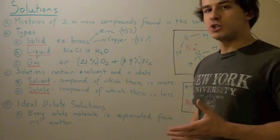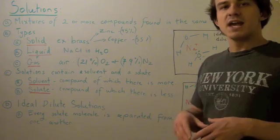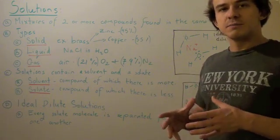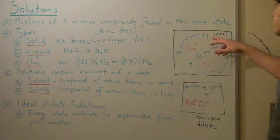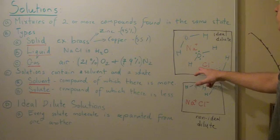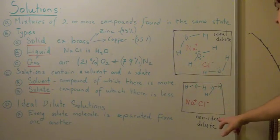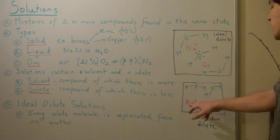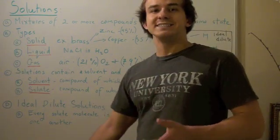Now let's look at ideal dilute solutions. These solutions are simply solutions in which every single solute molecule is separated by a solvent molecule, so there is no interaction between neighboring solute molecules. In an ideal dilute solution, the sodium and chloride are separated by water molecules so they can't interact. In a non-ideal dilute solution, the sodium and chloride are able to interact with each other, so therefore it's non-ideal.